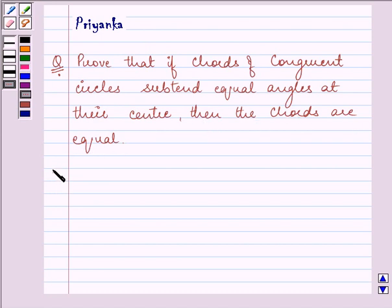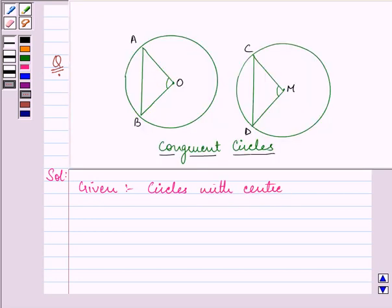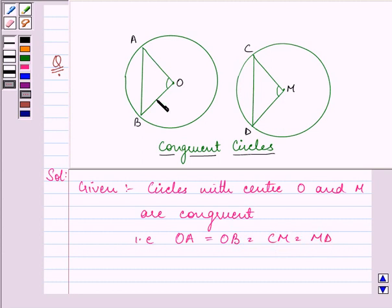So what we need to do over here is first of all write down whatever is given to us in the question. We are given that circles with center, the figure to be referred is this, the circles with center O and M are congruent. That is their radius, OA is equal to OB is equal to CM is equal to MD. The radius of these congruent circles are equal.